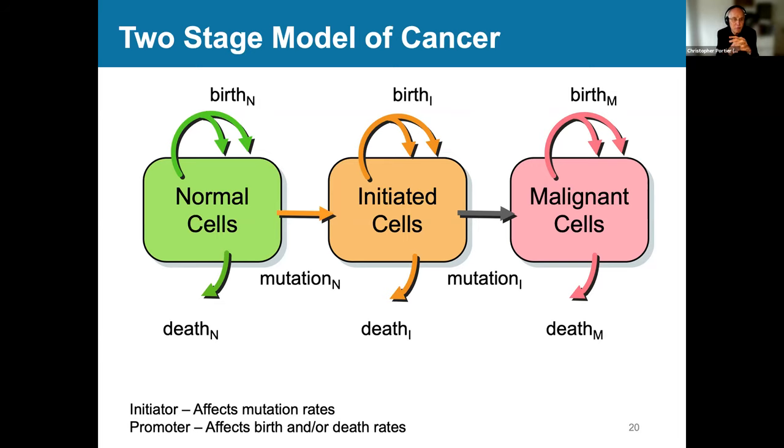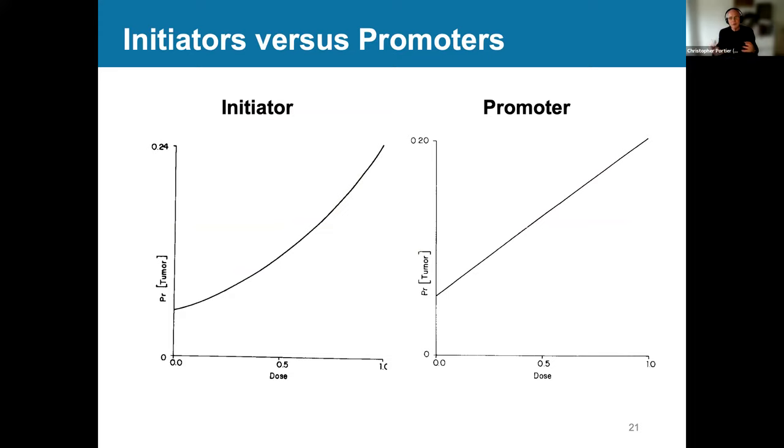You can ask yourself, what does the dose response curve look like for an initiator versus a promoter? And when you work through all the math and do several different things, again, you can see all types of different patterns. But what's surprising is that promoters tend to have very linear dose response, and initiators, theoretically, tend to have a little bit curvature to them in the dose response.